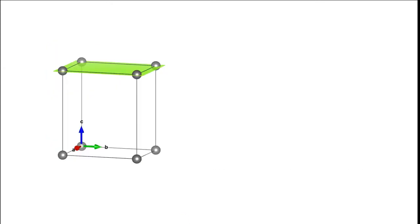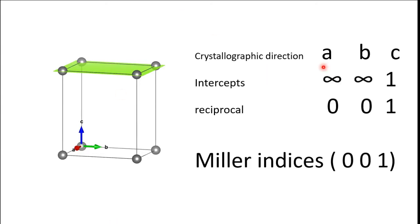Third case: is case mein Miller Index ki value agar nikalni padi toh intercept nikaloonga. A ke parallel mein yeh is direction mein A ke parallel mein run kar raha hai, toh yahan par intercept hua infinite. B ke parallel mein bhi yeh aapke paas plane run kar raha hai, toh B axis ko kabhi bhi intersect nahi karega — at infinity. Ab C axis: C axis par yeh 1C par intersect kar raha hai, toh in terms of C iski value hogi 1. Intercept values: infinite, infinite, 1. Reciprocals: 0, 0, 1. Miller Index 0, 0, 1.